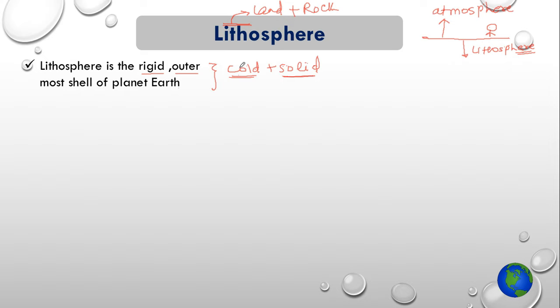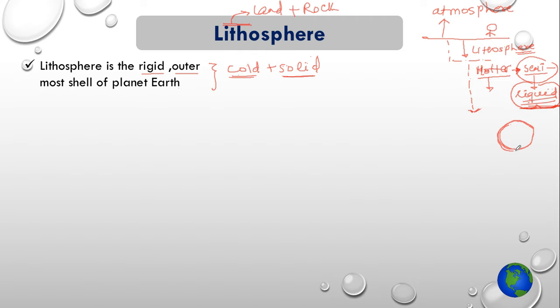As you move below the lithosphere towards the core of earth, the earth becomes hotter. The higher temperature doesn't allow the material to stay in solid state, so materials exist in semi-liquid states, and then near the core the material exists in liquid state. The inner portion of earth has been divided into layers which are crust, mantle, and core. This land where you are standing is your crust. Below the crust comes your mantle, where materials are in semi-solid state, and then comes your core.